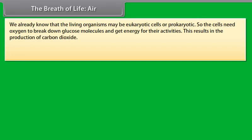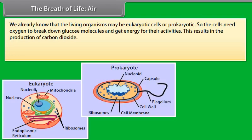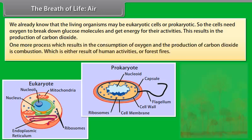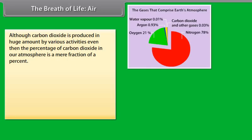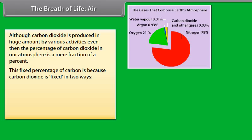We already know that the living organisms may be eukaryotic cells or prokaryotic. So the cells need oxygen to break down glucose molecules and get energy for their activities. This results in the production of carbon dioxide. One more process which results in the consumption of oxygen and the production of carbon dioxide is combustion. Combustion is either result of human activities or forest fires. Although carbon dioxide is produced in huge amounts by various activities, even then the percentage of carbon dioxide in our atmosphere is mere fraction of a percent. This fixed percentage of carbon dioxide is because carbon dioxide is fixed in two ways.